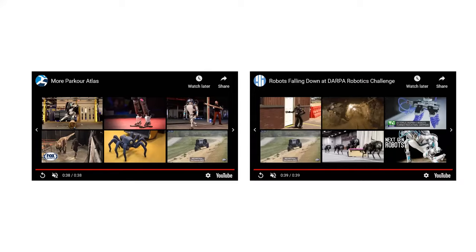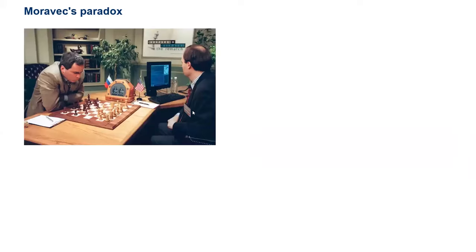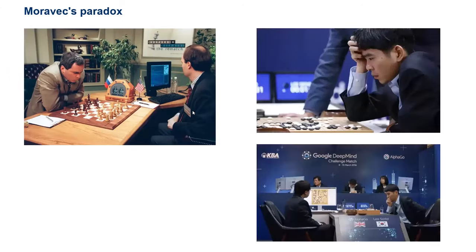On the other hand, many times what we hear is that computers beat humans at something. For example, this is a picture from 1997 when a computer beat the world's best player in chess. And then there are pictures from when AlphaGo — the computer program designed by Google DeepMind — beat the world's best player in Go. The second program was actually using reinforcement learning to play the game against the world's best player.